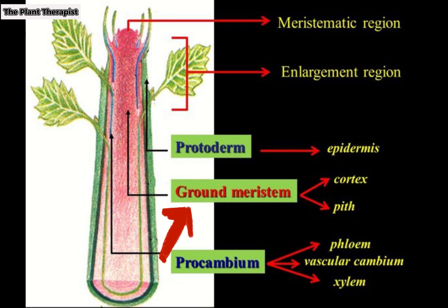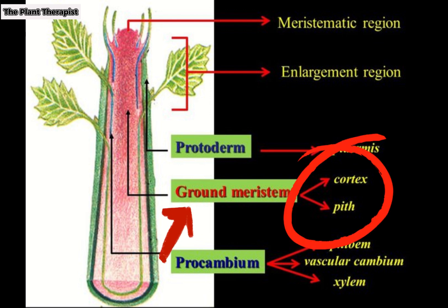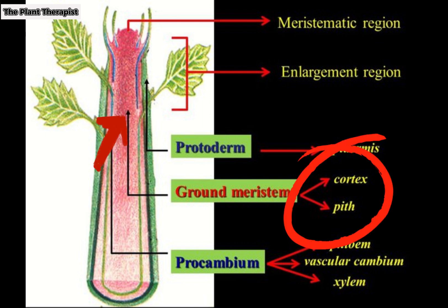The ground meristem produces two tissues composed of parenchyma cells. The parenchyma tissue in the center of the stem is the pith. The pith cells tend to be very large and may break down shortly after they have formed, leaving a cylindrical hollow area. The other tissue produced by the ground meristem is the cortex, which may become more extensive than the pith.